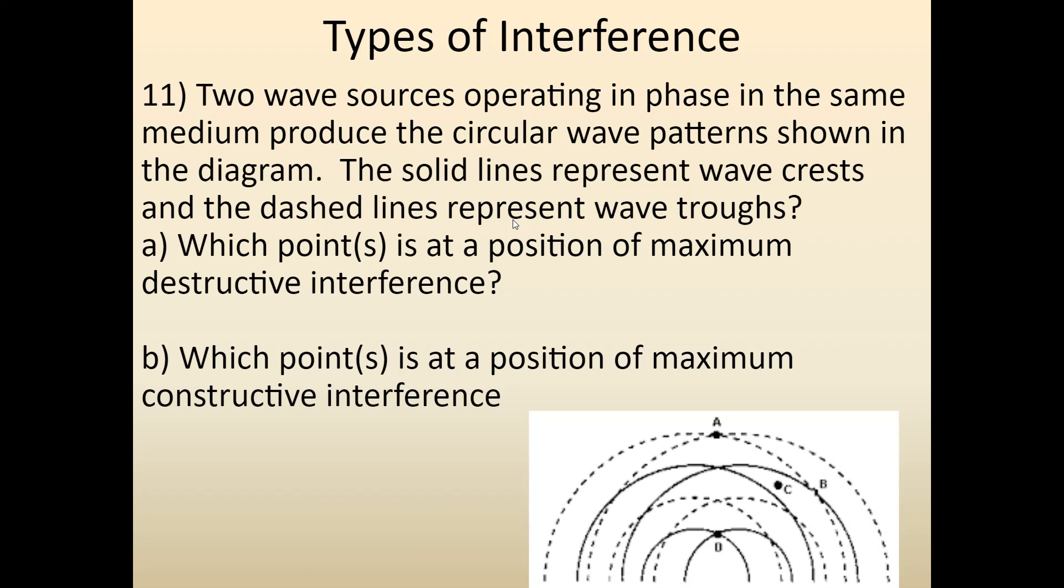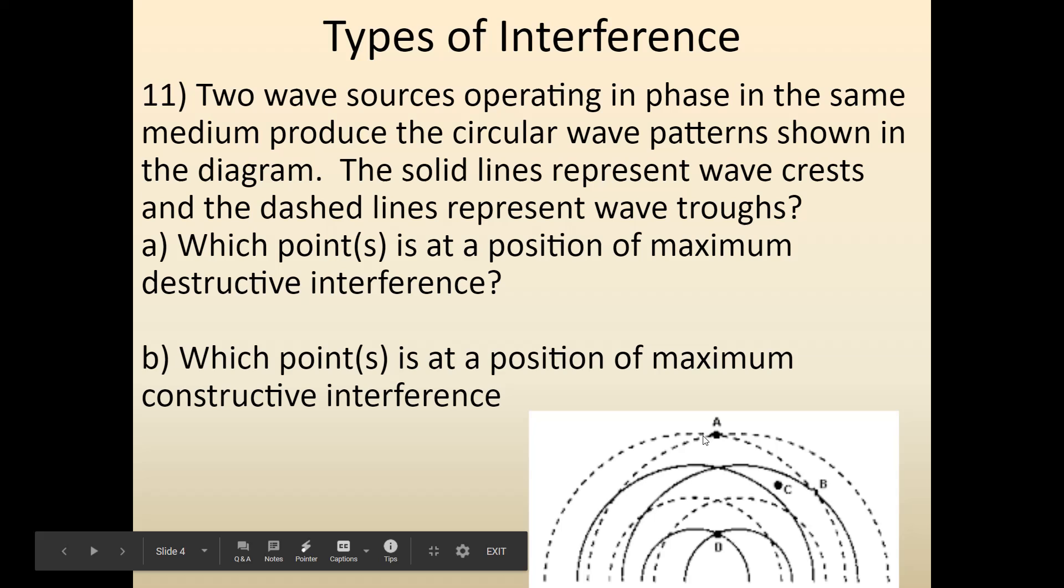Here's the next question. You can pause the video, work on this stuff. For part A, they want to know what would create maximum destructive interference. So we're looking for two opposite points. A are two dotted lines, so those are not opposites. D is two solid lines. C is just nothing, it's like in the middle of the sets of waves. But point B is right here, where a dotted and a solid line cross. So this would be maximum destructive interference.